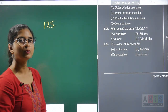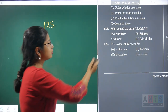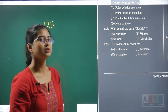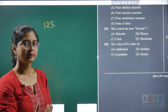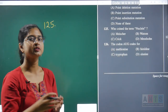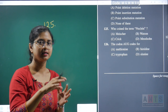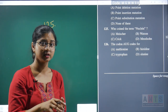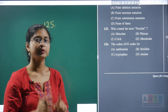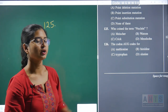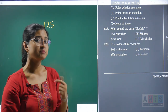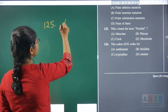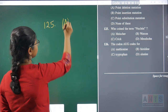Question 125: who coined the term 'nuclein'? The term nuclein, used to represent the acidic genetic material present inside the nucleus, was first coined by Frederick Miescher. Hence, question 125's correct answer is option A.